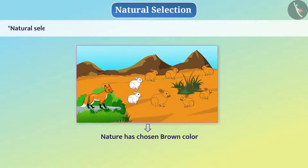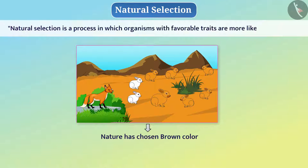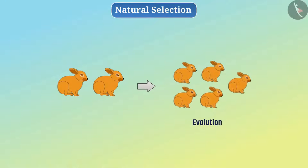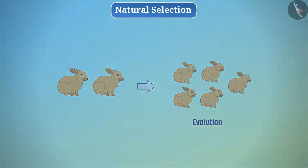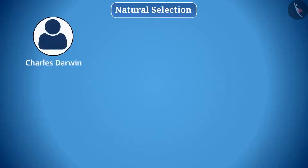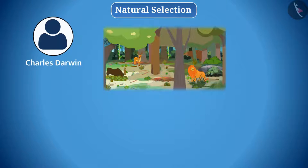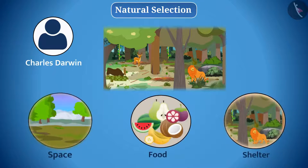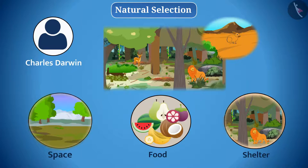Natural selection is a process in which organisms with favourable traits are more likely to survive. From this, we understand that natural selection is taking the organism towards evolution. The theory of natural selection was proposed by Charles Darwin, in which he said that all organisms compete for different needs like space, food and shelter and to survive in extreme conditions. The organisms which show the necessary adaptations win in this competition and survive.